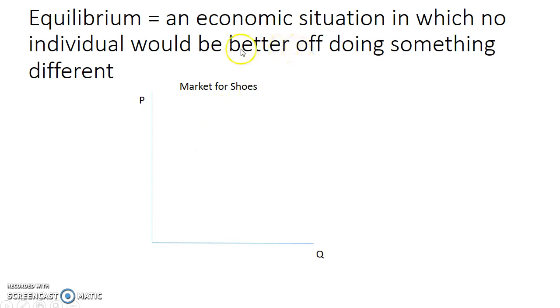Equilibrium is an economic situation in which no individual would be better off doing something different. In this situation, we have our market for shoes. Because I have the title, I can